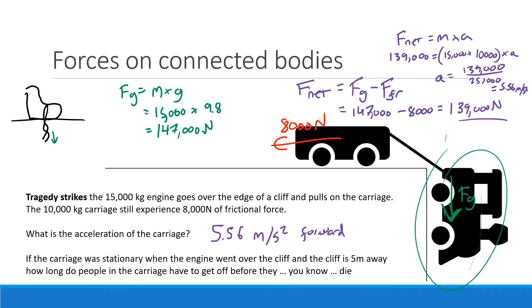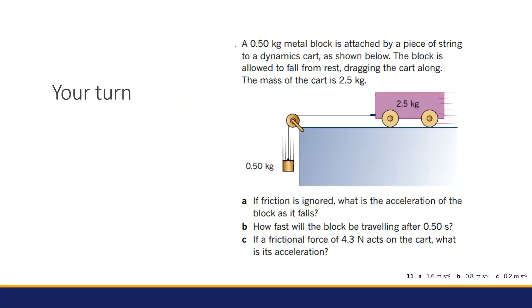There's a final kinematics question I don't have time to complete — it just uses s equals ut plus half a t squared with the 5.56 value. I'm going to put this question up on the Google Classroom at recess. I'd like you guys to give it a try for homework — it's the same question with different numbers, and I've got answers for you. I'll go through it quickly at the start of next lesson. I'll see you guys tomorrow.